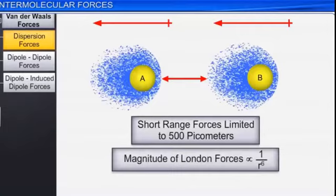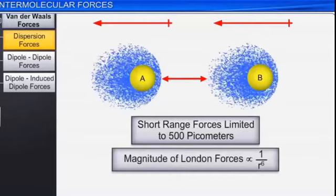So, the distribution can be symmetrical or unsymmetrical. It is unsymmetrical because of the electron cloud. This unsymmetrical distribution induces a dipole in the neighboring atom — and the resulting force is the dispersion or London force. Its range is short: 500 picometers (500 × 10^-12 meters), and the London force magnitude is inversely proportional to r^6.